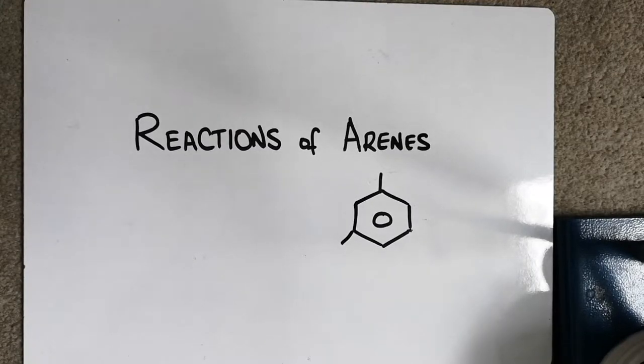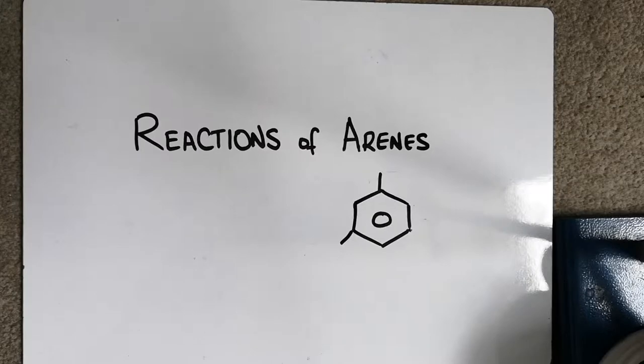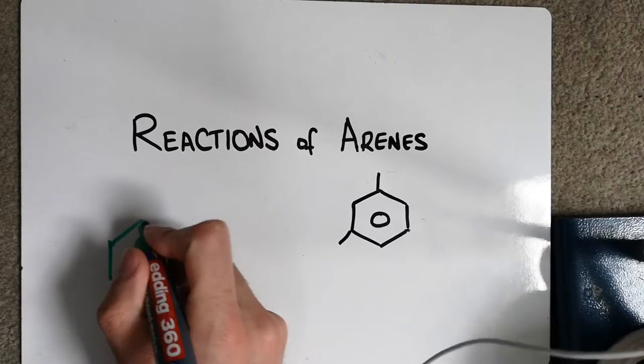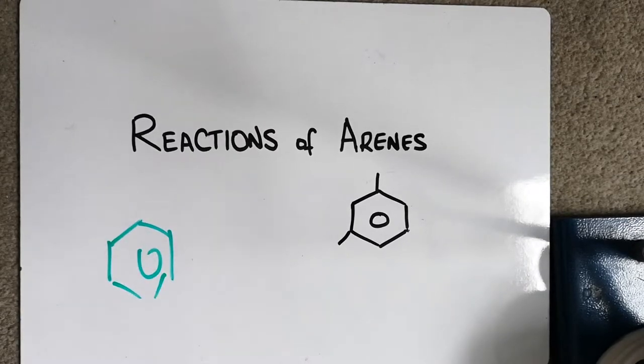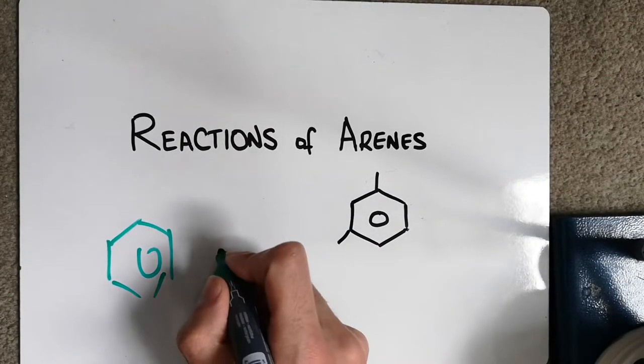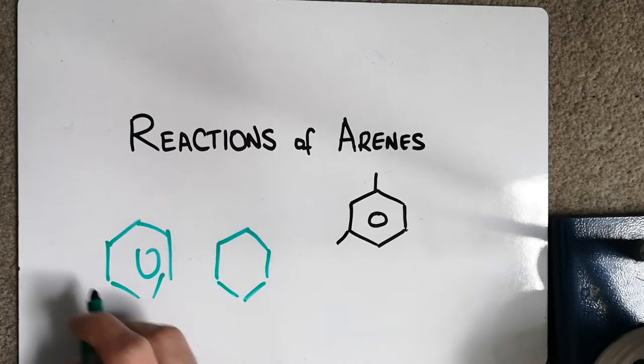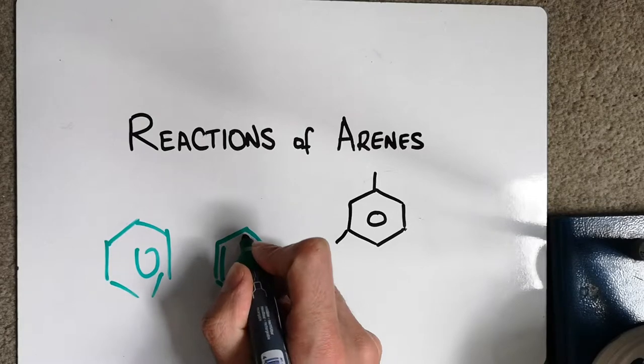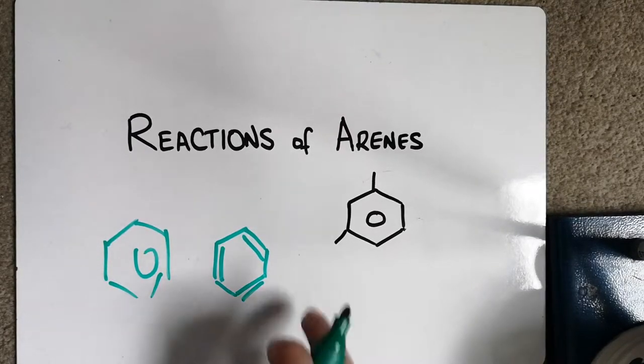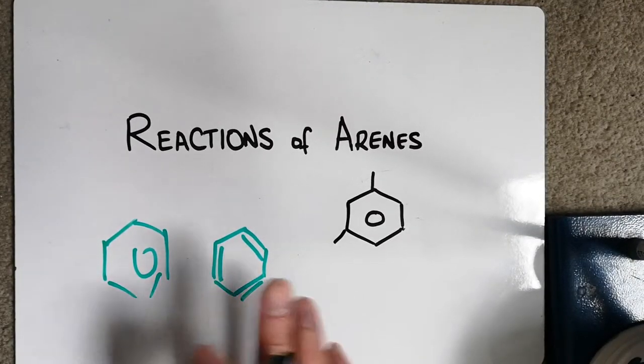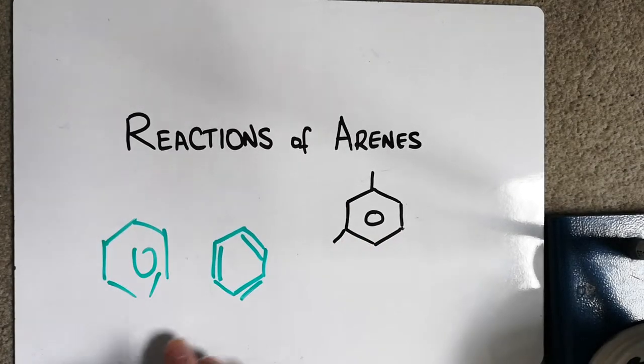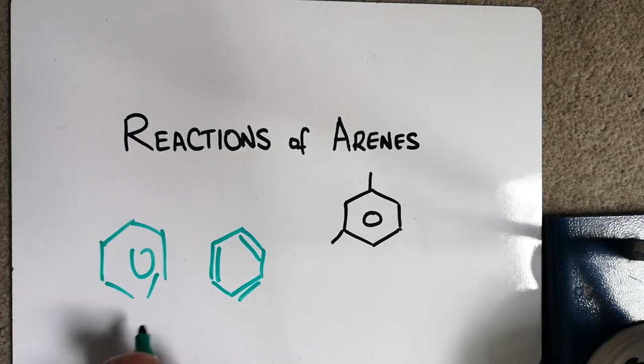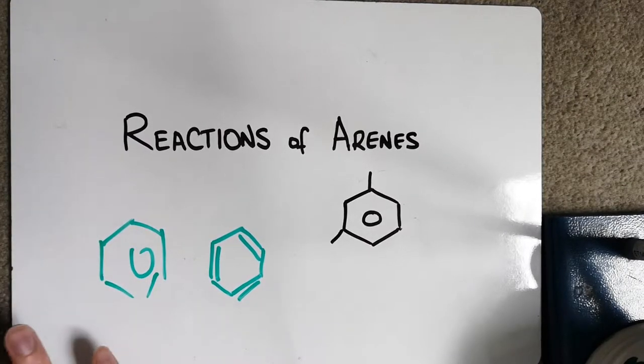Hi, this is going to be a video on the reactions of arenes. Now arenes, you may have seen, are called benzene. It's often drawn as a hexagon, often with a circle in the center, sometimes with three double bonds going around. This arene here has got some side chains on it, but you'll see lots of different ways.